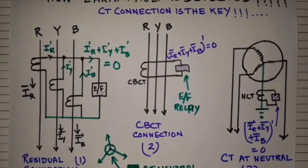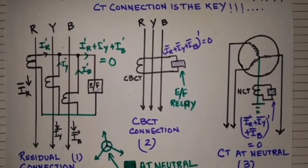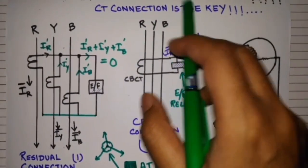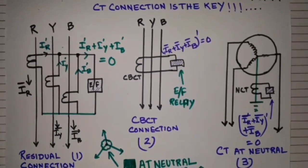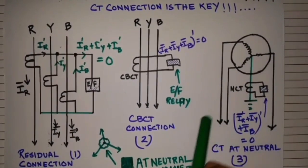Basically, it is a simple overcurrent relay, but it distinguishes the earth fault due to the CT connection. So CT connection is the key of detecting earth fault.